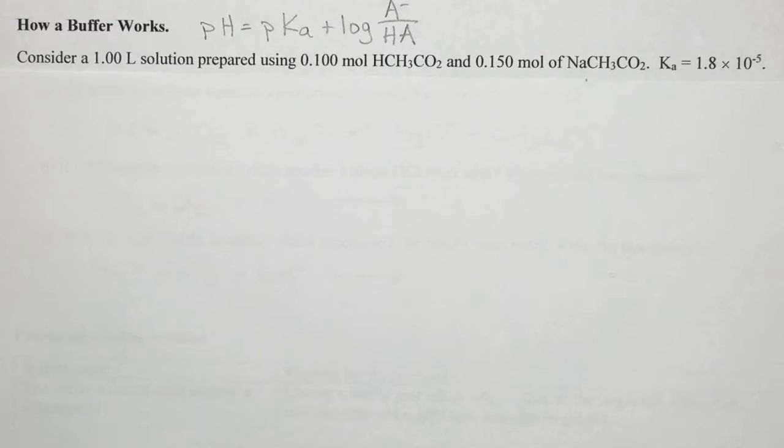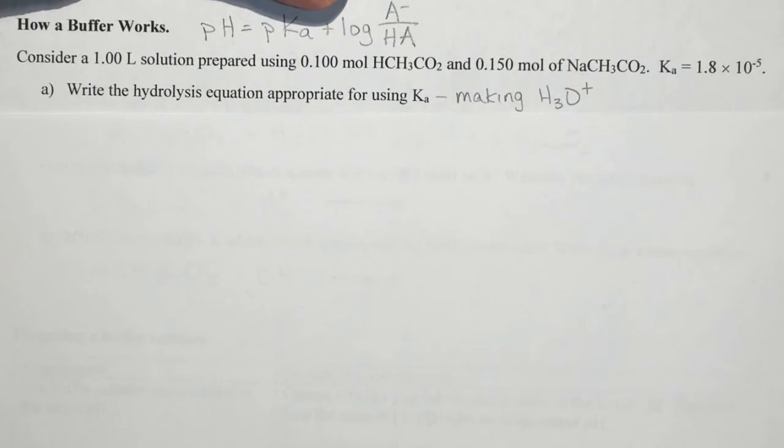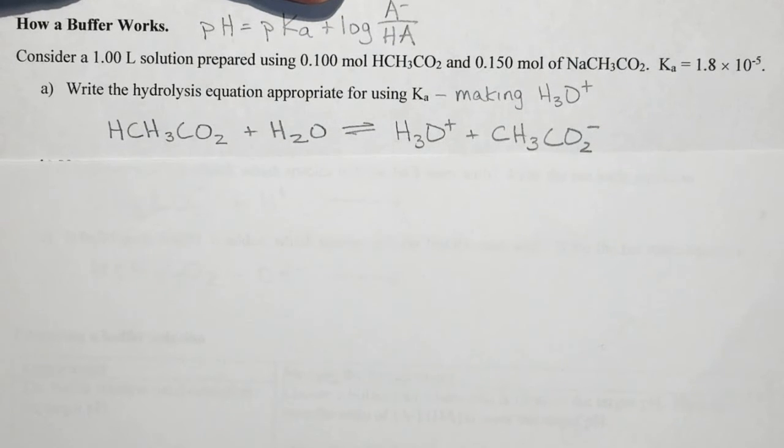So first let's look at how a buffer works. Let's consider a solution that contains one mole of acetic acid and one mole sodium acetate with a Ka of 1.8 times 10 to the negative fifth. First let's write a hydrolysis equation appropriate for using Ka, which means we're going to be making hydronium ion. So our equation looks like this where the acetic acid reacts with water and we make hydronium ion and the acetate ion.